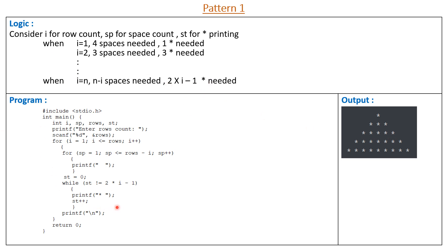I have written the same logic in the program. I entered rows equal to 5, started the row counter from 1 to I less than or equal to rows. I have written one for loop and one while loop for space printing: SP equals 1 to SP less than or equal to rows minus I to print the spaces, and the condition 2 multiplied by I minus 1 for printing the stars. I added extra spaces to display the pattern properly. After executing this program we get this type of output.